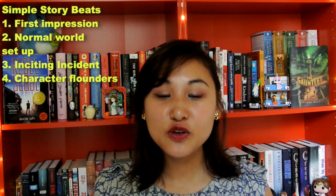First impression: Katniss wakes up in District 12 and thinks about the day of the Reaping. Normal world setup: Katniss goes hunting with Gale — she's the breadwinner for her family, goes to the black market to sell her food, and thinks about the Reaping. Inciting incident: Prim is chosen for The Hunger Games and Katniss volunteers to take her place. Character flounders: Katniss knows she's going to be in The Hunger Games but believes she will not survive. She asks Gale to take care of her family and goes to training hoping to keep her head down and not attract attention.